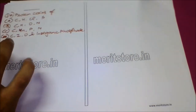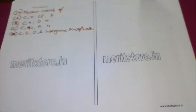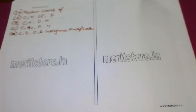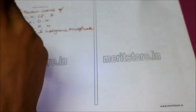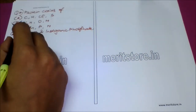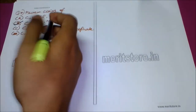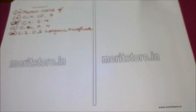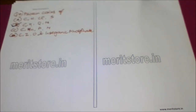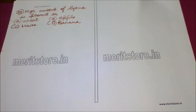Our next question is: protein consists of — Option A: carbon, hydrogen, chlorine, and sulfur; Option B: carbon, hydrogen, oxygen, and nitrogen; Option C: carbon, manganese, phosphorus, and nitrogen; Option D: carbon, iodine, oxygen, and inorganic phosphate. The answer is Option B, because protein consists of carbon, hydrogen, oxygen, and nitrogen, where nitrogen is found in the form of nitrogen bases.